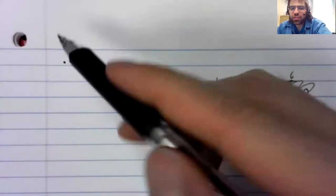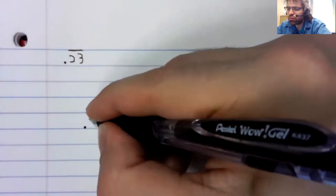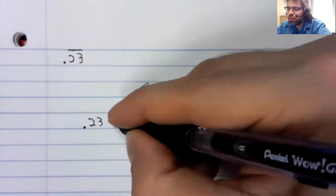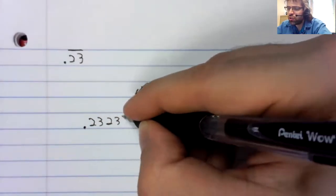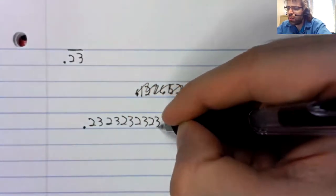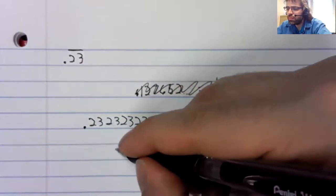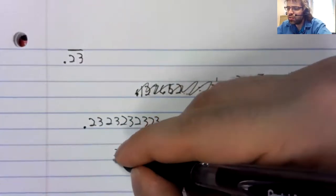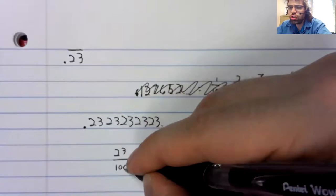Repeating decimals have the property that when you write them as an infinite sum, the series is geometric.